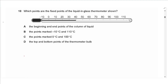Question 18: Which points are the fixed points of the liquid-in-glass thermometer shown? The fixed points are 0°C (melting point of water) and 100°C (boiling point of water), not the end points. Note: questions on thermometers are not in the new syllabus, so these can be skipped in future.